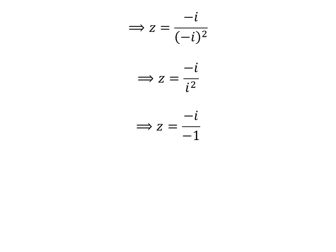We know square of imaginary unit i is minus 1, so z is equal to minus i upon minus 1. Canceling minus sign in the numerator and the denominator gives us z is equal to i.